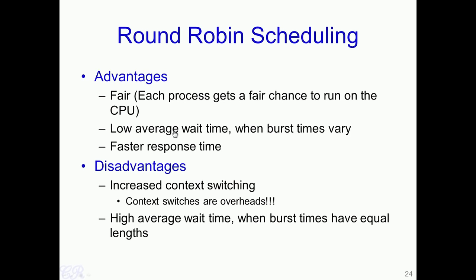The advantages of Round Robin scheduling are: it is fair since each process gets a fair chance to run; the average wait time is low especially when burst times vary; and response time is very good. The drawbacks are: increased context switching with considerable overhead, and the average wait time can be high when burst times are all equal.